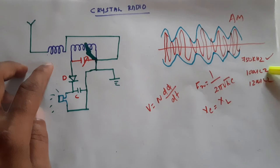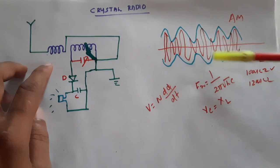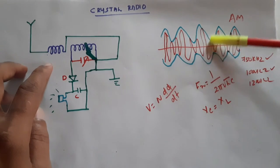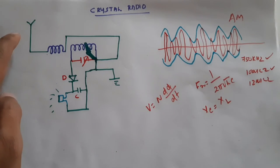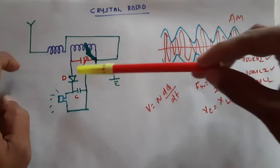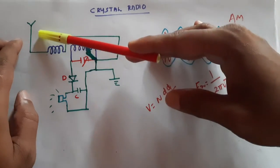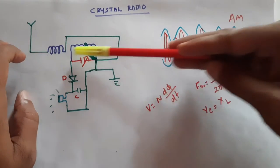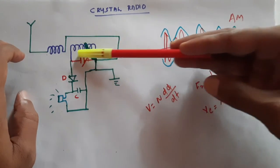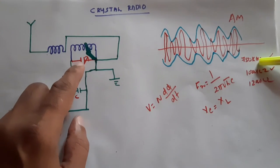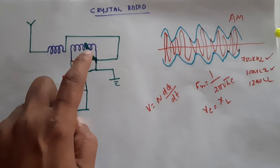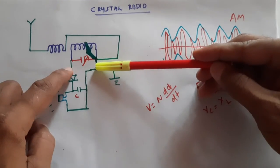Another station broadcasting at 1000 kilohertz sends its signal at that higher frequency but carries the same type of message. When both signals arrive at this circuit, if we have tuned this circuit to 750 kilohertz, then at 750 kilohertz only, this circuit will produce a high voltage. At all other frequencies, the voltage at this point will be very low.